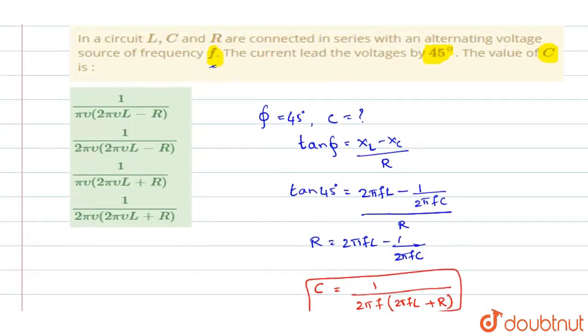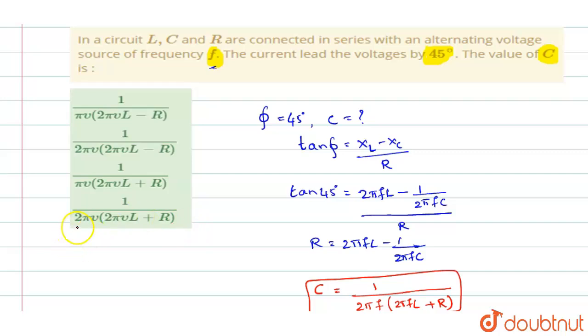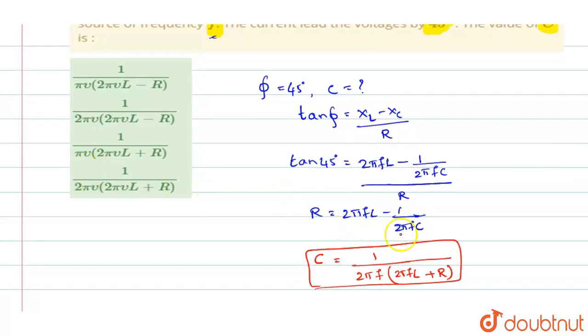Now checking the choices you have, you have 1 by 2 pi NU. In terms of F they are asking and the options is in terms of NU. F and NU are same. Frequency will be nothing but NU, it can be even written as NU.